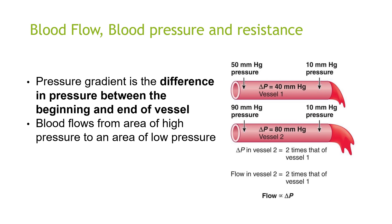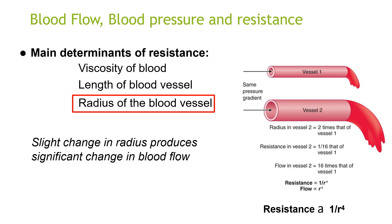The pressure gradient is the difference in pressure between the beginning and end of the vessel, and blood flows from an area of high pressure to an area of low pressure. The main determinants of resistance are the viscosity of the blood, the length of the blood vessel, and the radius of the blood vessel. A slight change in the radius produces a significant change in blood flow.